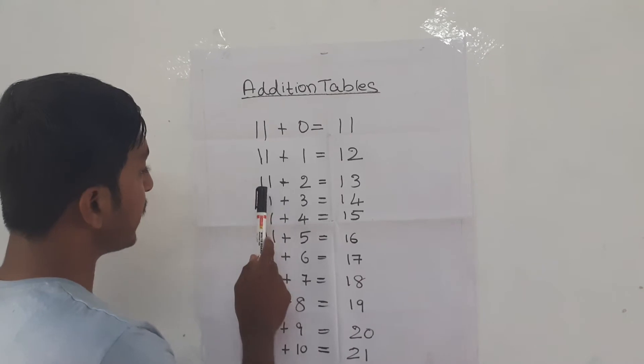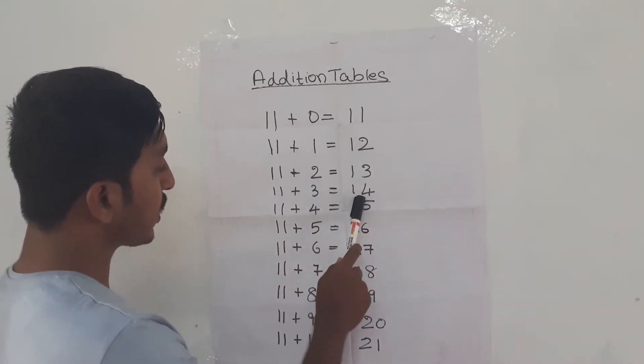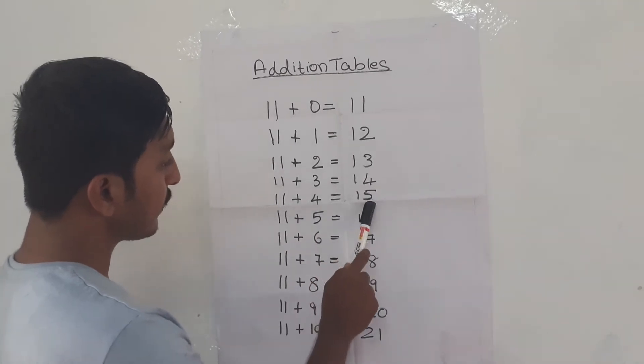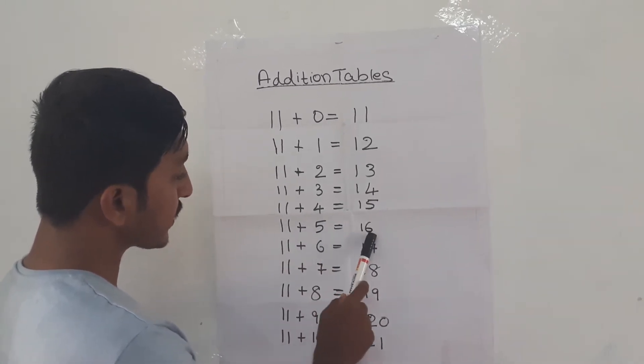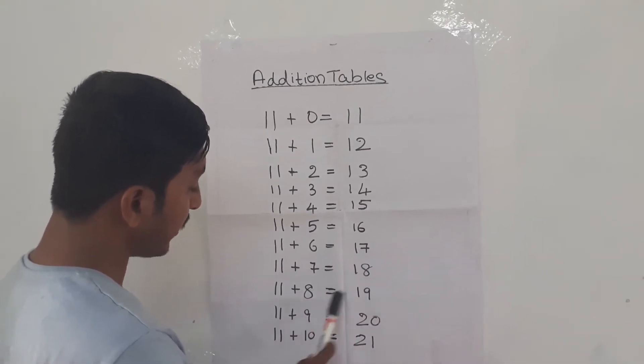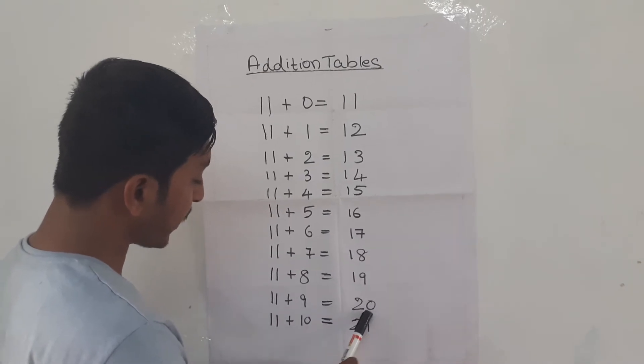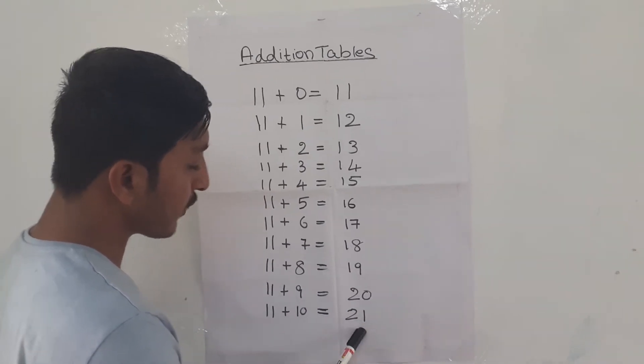In the same way, 11 plus 2 equals 13, 11 plus 3 equals 14, 11 plus 4 equals 15, 11 plus 5 equals 16, 11 plus 6 equals 17, 11 plus 7 equals 18, 11 plus 8 equals 19, 11 plus 9 equals 20, 11 plus 10 equals 21.